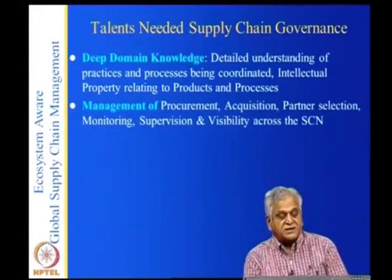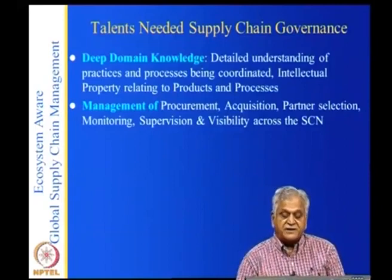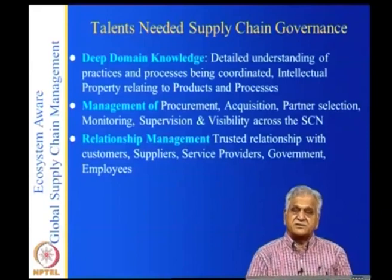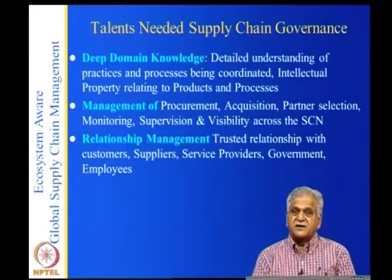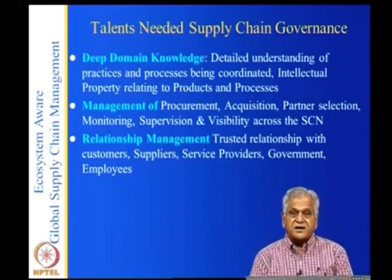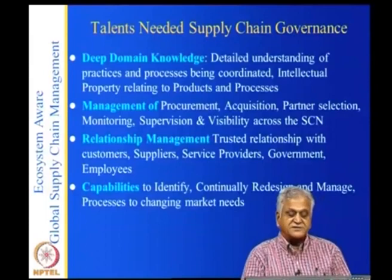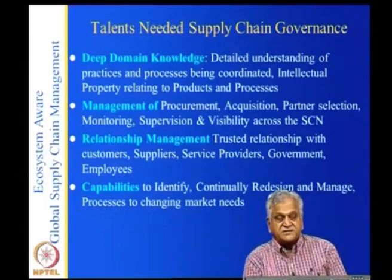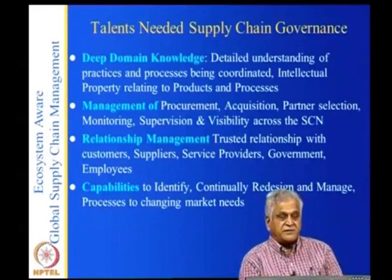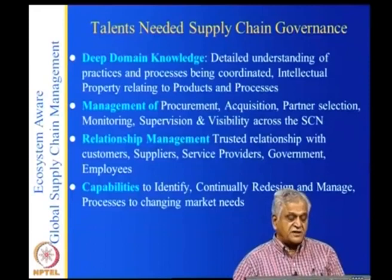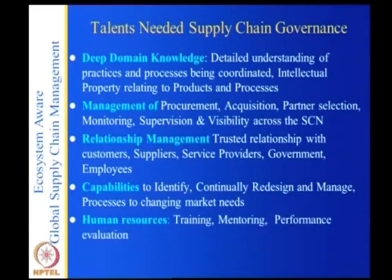Governance requires management of procurement, acquisition, partner selection, monitoring, supervision, and visibility across the supply chain. Relationship management is essential — with suppliers, distributors, retailers, customers, governments, and all resource suppliers like electricity, water, human resources, and educational institutions. One must also have capabilities to continually design and manage processes to changing market needs, and handle human resources training, mentoring, and performance evaluation.